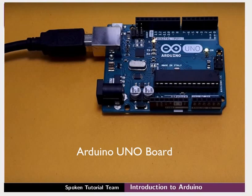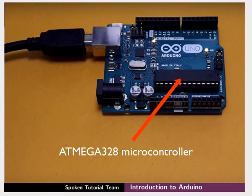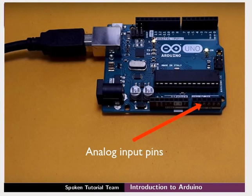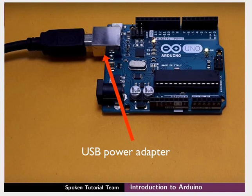This is the Arduino board. The Arduino Uno board is one of the popular variants of the Arduino project. It contains an ATmega 328 microcontroller, digital input-output pins, analog input pins, and a USB power adapter. The USB power adapter can be used for programming the board.